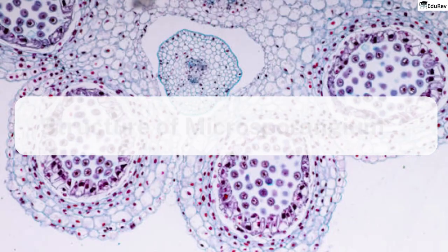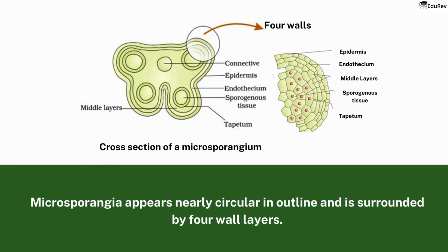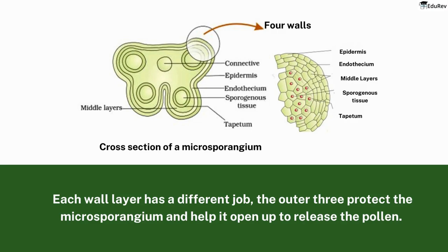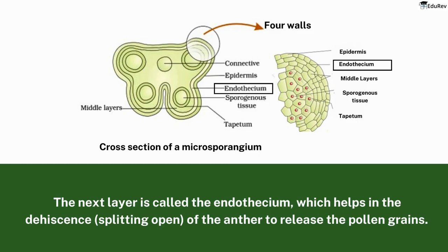Structure of Microsporangia: microsporangia are tiny structures found in flowers that give rise to pollen grains. If you were to take a cross-section of a typical microsporangium, you would see that it appears nearly circular in outline and is surrounded by four wall layers. Each wall layer has a different job. The outer three protect the microsporangia and help it open up to release the pollen. The outermost layer is called the epidermis, which provides a protective covering. The next layer is called the endothecium, which helps in dehiscence — splitting open — of the anther to release the pollen grains.